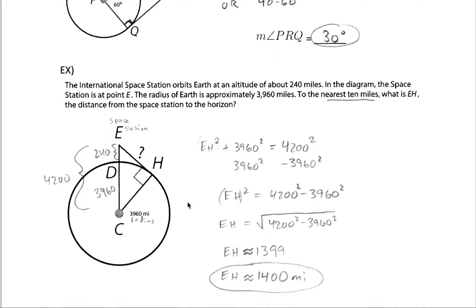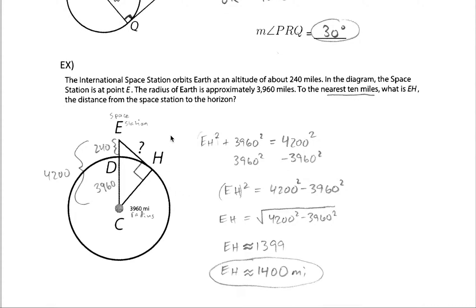In the next example we're going to take off into space and find the distance from some made-up space station here at point E to that horizon point right here at point H. So knowing that the radius of the earth is about 3960 miles and knowing our space station's altitude from the surface of the earth,